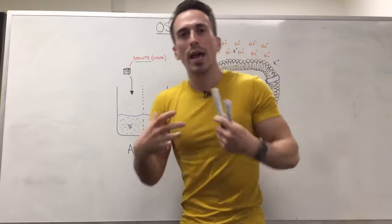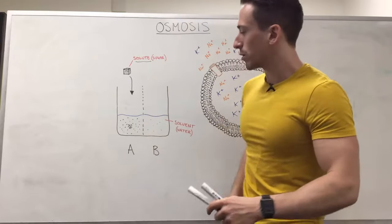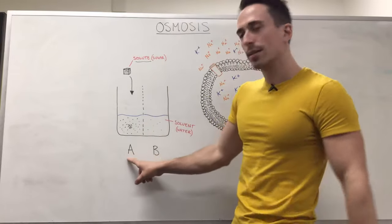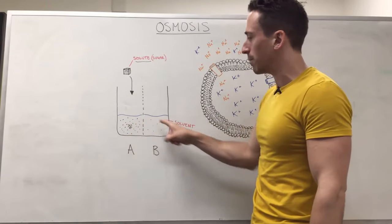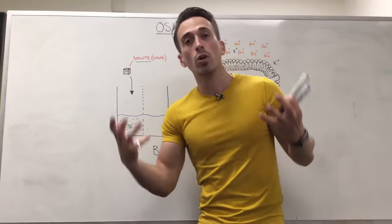Now when you look at this and think, well how can I possibly balance out the concentration between A and B? A has a higher concentration than B. I can't move those solutes over from A to B to even out the concentration. What could I do?